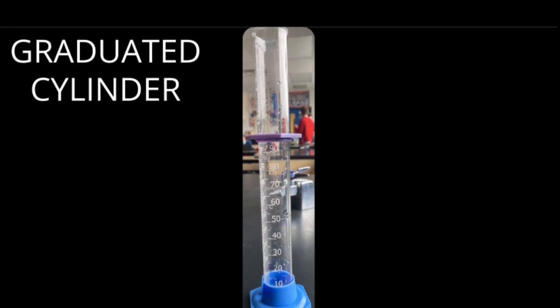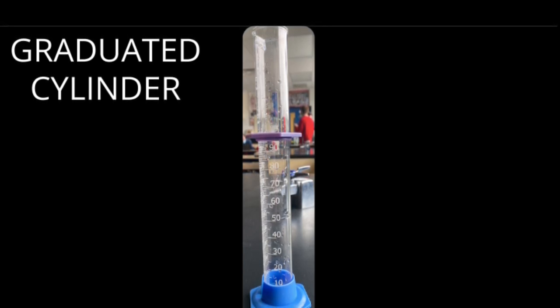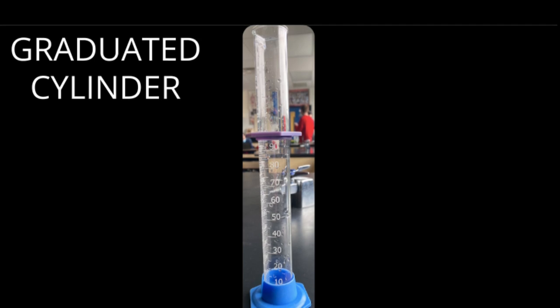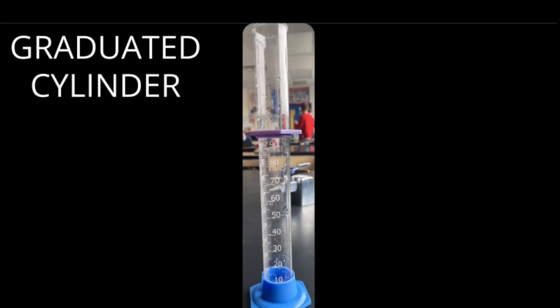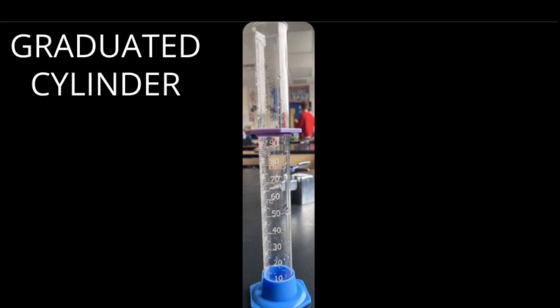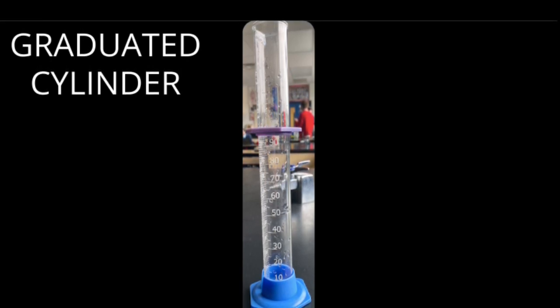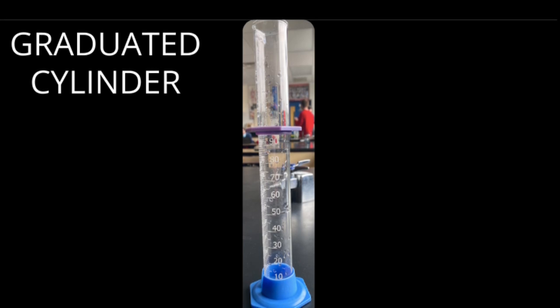Lastly, a graduated cylinder. A single one ranges from six to twenty dollars depending on the quality and volume of liquid held. A graduated cylinder is a piece of equipment that is used to measure volume. It is more precise than a beaker due to the marked incremental graduates on the cylinder. The numbers on the side are more exact and grow by smaller amounts than a beaker making it easier to read.